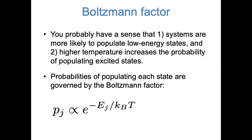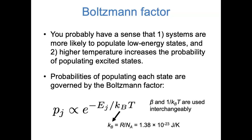A little terminology: kB is the Boltzmann constant. You've probably seen the gas constant, capital R, and the Boltzmann constant is just the single-particle version of the gas constant. It's R divided by Avogadro's number, which in SI units is equal to 1.38 times 10 to the negative 23 joules per kelvin. If you look at the units in that exponent — energy in joules, Boltzmann constant in joules per kelvin, and temperature in kelvin — all of the units cancel out and the exponent is unitless. Throughout statistical mechanics, we'll often see kBT in the denominator, so you'll sometimes see 1 over kBT written as the Greek letter beta. A Boltzmann factor can alternatively be written as e to the minus beta times energy.